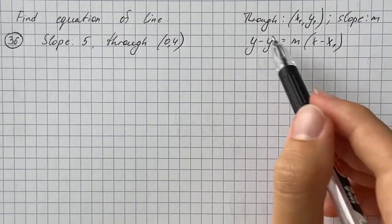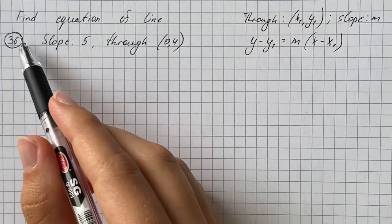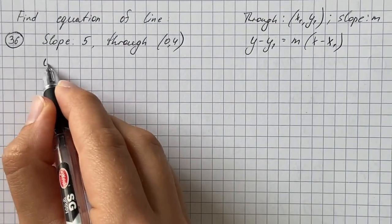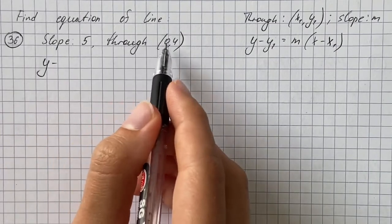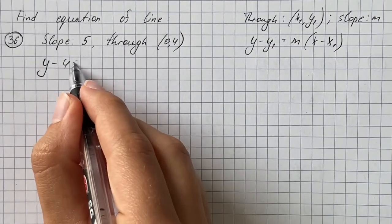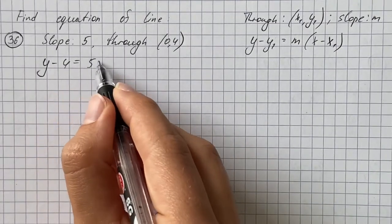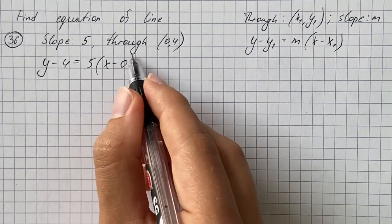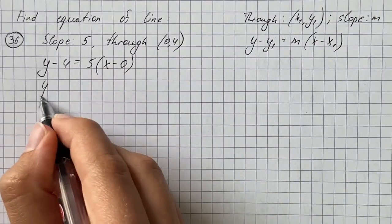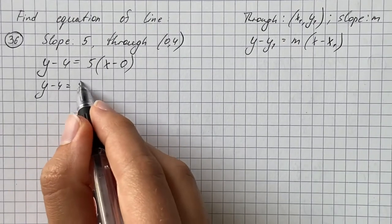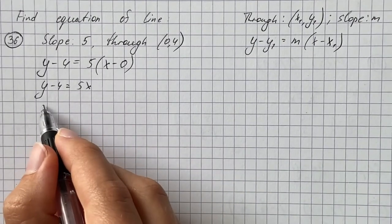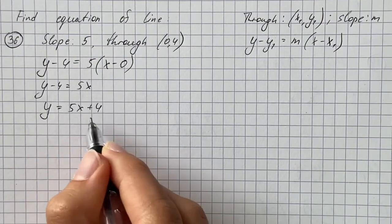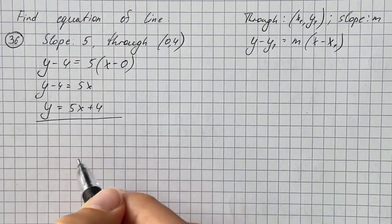Now we use this formula to find the equation in number 36. That's going to be y minus y coordinate which is 4 equals slope which is 5 times x minus x coordinate which is 0. That's y minus 4 equals 5x. We can isolate y and get y equals 5x plus 4. So that's our equation.